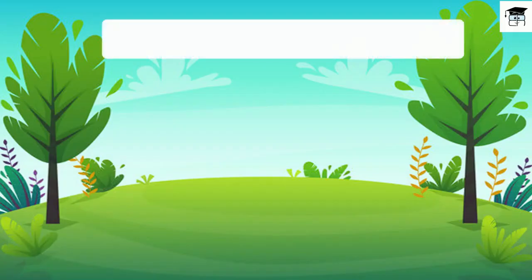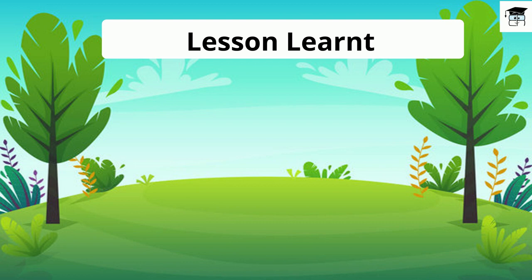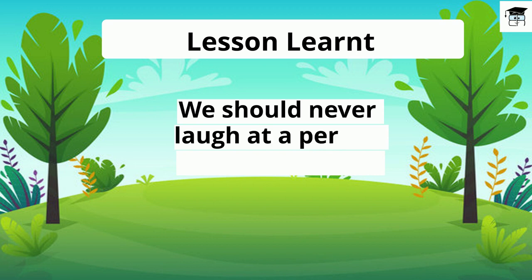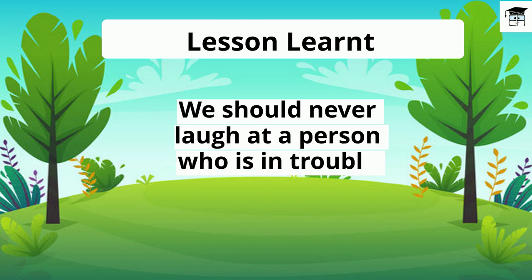Children, we learnt a very beautiful lesson from this story. The lesson is: we should never laugh at a person who is in trouble. The bubble was laughing at the straw and shoe, but in the end, he burst himself while laughing.